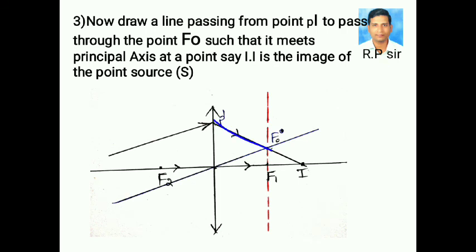Last, we have to draw a line from P dash towards principal axis through F0. Here, I is the image of the object.